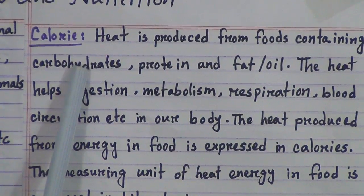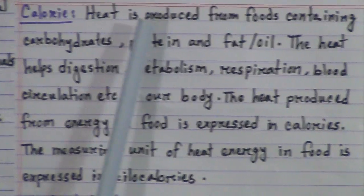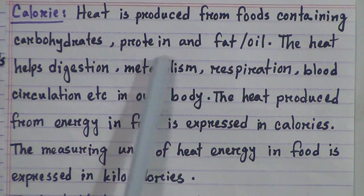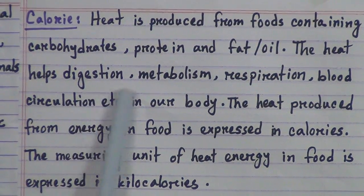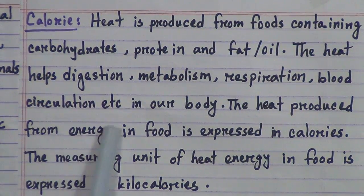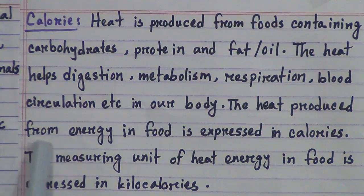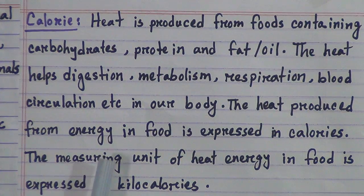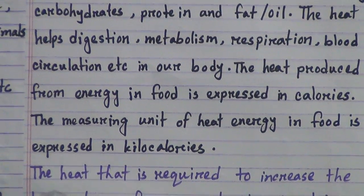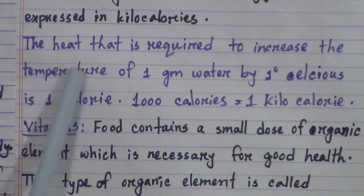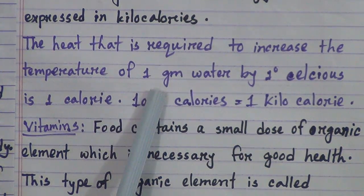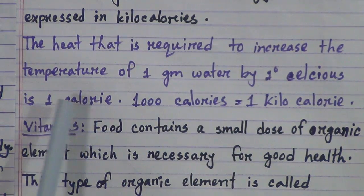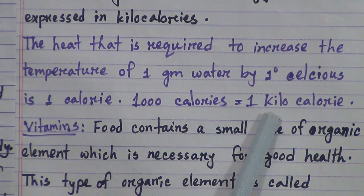Now we will discuss calorie. Heat is produced from foods containing carbohydrate, protein, and fat and oil. This heat helps digestion, metabolism, respiration, and blood circulation in our body. The heat produced from energy in food is expressed in calories. The measuring unit of heat energy in food is expressed in kilocalories. The heat required to increase the temperature of 1 gram of water by 1 degree Celsius is 1 calorie, and 1000 calories equals 1 kilocalorie.